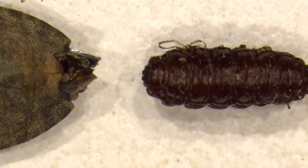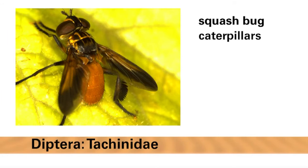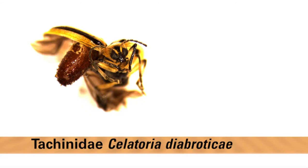There are many species of tachinids, and in addition to the squash bug, their hosts include caterpillars, stink bugs, and cucumber beetles. Cucumber beetles are attacked by the tachinid flies Celatoria diabroticae and Celatoria setosa. These flies emerge from the pest to pupate, killing it.